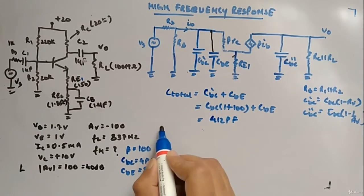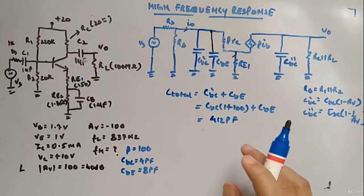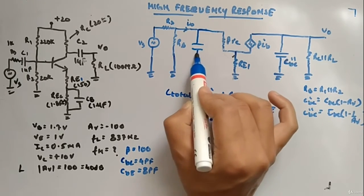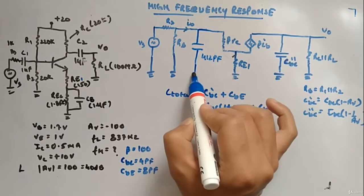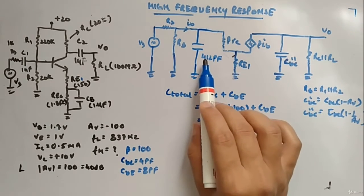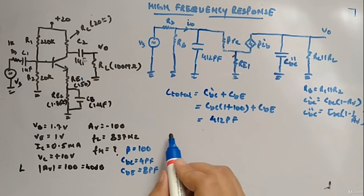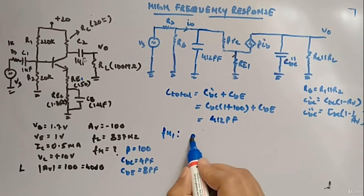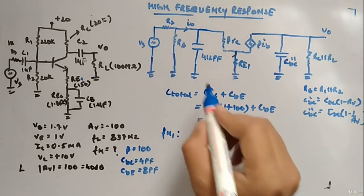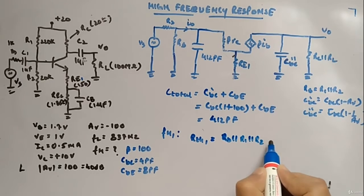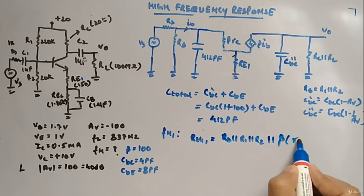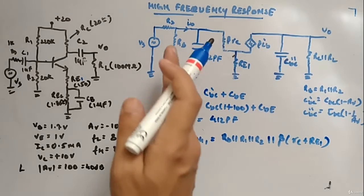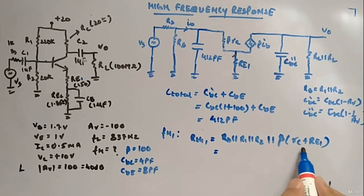That gives 4 × 101 + 8 = 412 pF. So C_total = 412 pF. We can now represent the two parallel capacitors as a single capacitor of 412 pF. To calculate fH1, we need RTH1 looking into this capacitor, which is RS parallel RB — that is RS parallel (R1 parallel R2) parallel with (β·re + RE1).